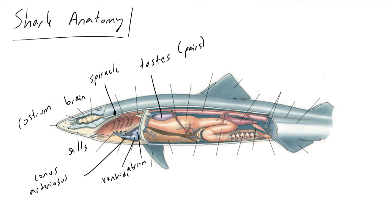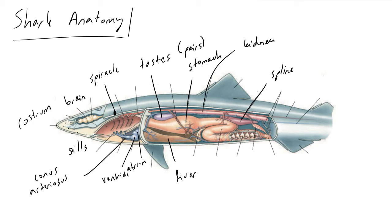After a shark consumes food, it will go through its mouth and enter into the stomach — this is the stomach right here. As the food is being digested, there is a liver required to secrete digestive enzymes, and in addition there is a spleen whose job is also to support those digestive enzymes. To filter the blood as it travels through the shark, there will be kidneys. Kidneys always filter blood, while the stomach, liver, and spleen are involved in digestion.